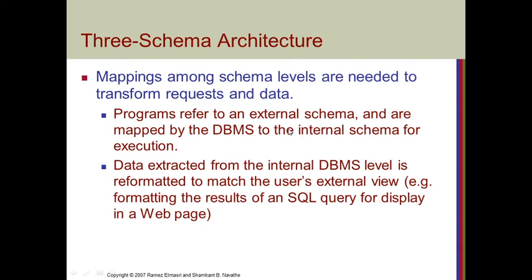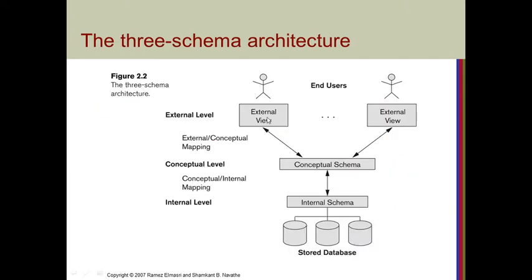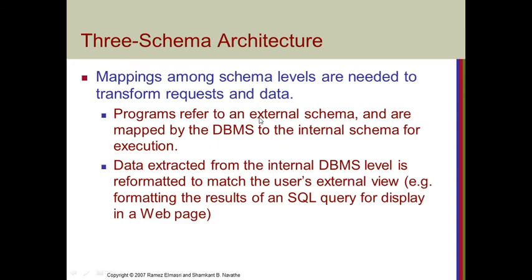Now we will continue with the three-schema architecture. Mapping among schema levels is needed to transfer requests and data. If you ask a question at the external level, that request has to be mapped to the conceptual schema, then transferred to the internal schema, and the appropriate answer has to be fetched and returned back to the end user. This is called mapping.